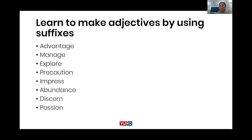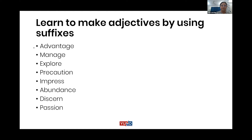Can you give an example? For example, 'disadvantage.' Okay, so we have 'advantage.' If I put 'dis' over here, then that's the opposite, right? This is the prefix. Prefix — advantage. Now give me a suffix to make it an adjective.